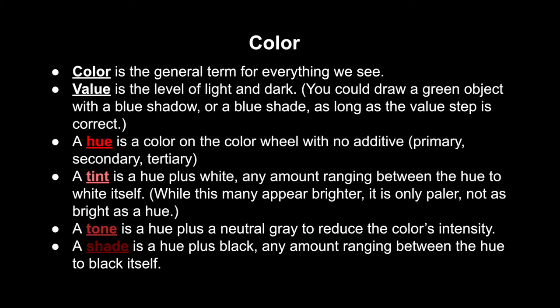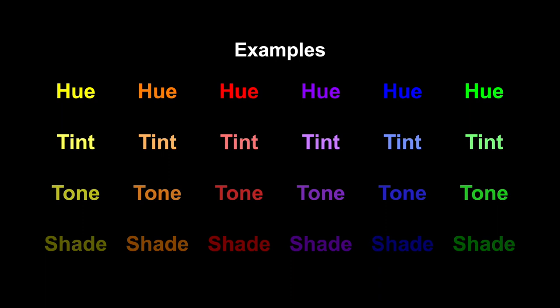Each color has its own variations outside of being mixed with each other. Color is usually a general term, but hue refers to the pure colors from the color wheel with no additive — whether primary, secondary, or tertiary. A tint is when you add white to a hue, ranging from the hue to just before white. A tone is when you add a neutral gray to a hue. A shade is when you add black, anywhere from the hue up to black. Value is a measurement of light and dark — for instance, when drawing a green object, the shadow is not just dark green; there are hints of blue in it. The value is still darker, but it's a different color.